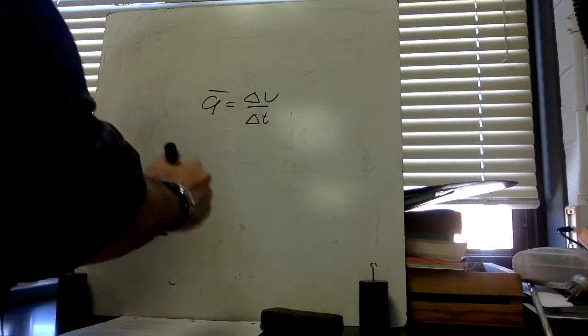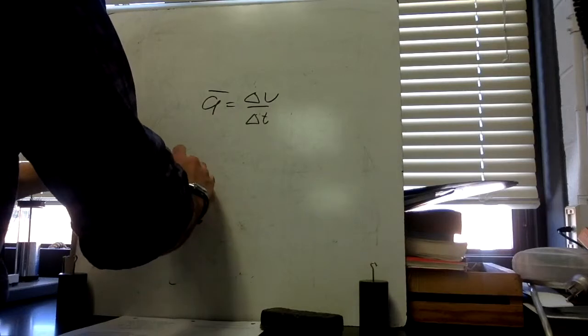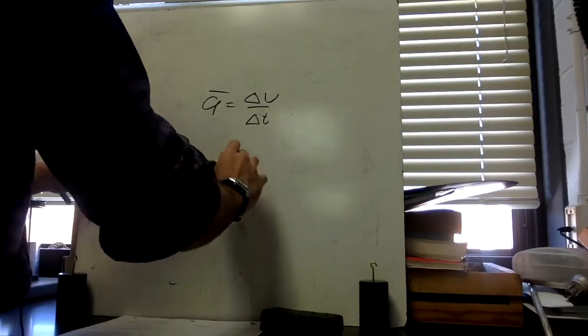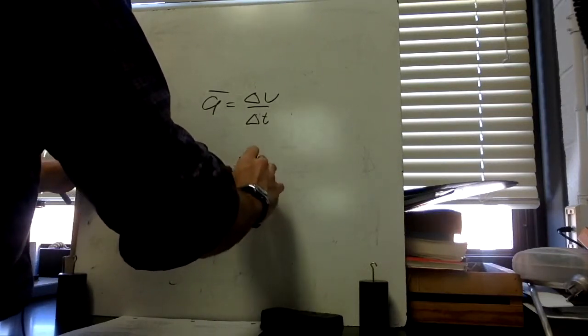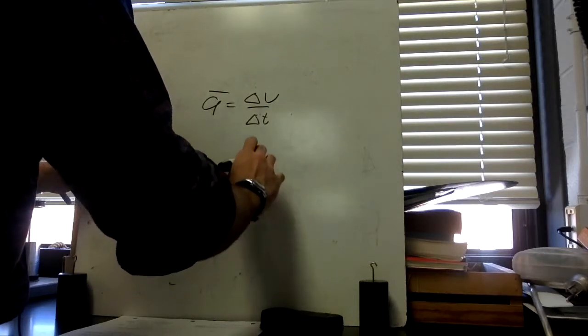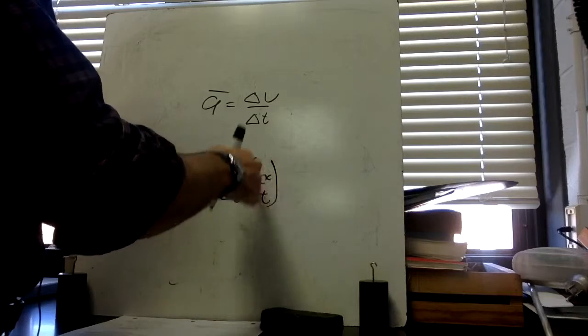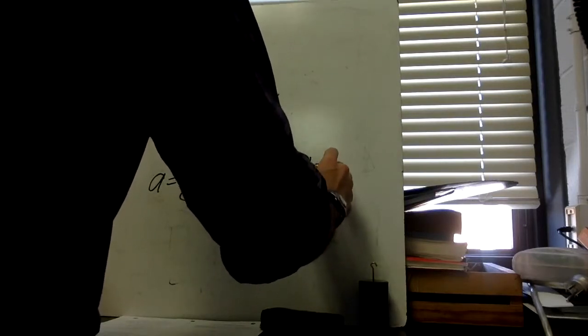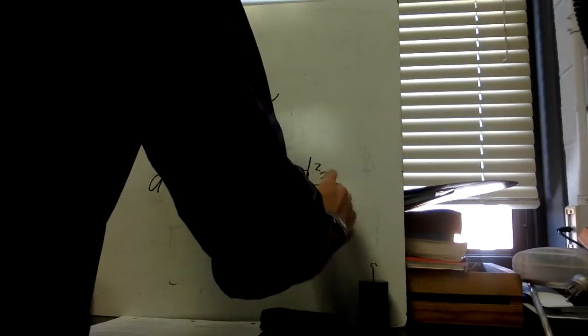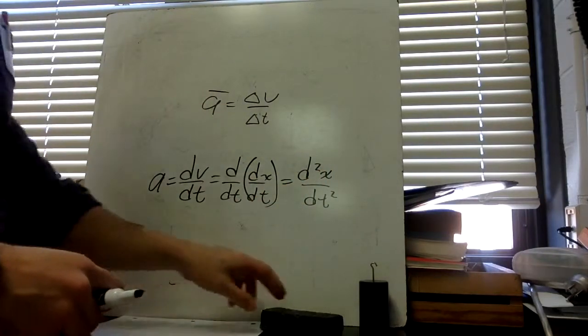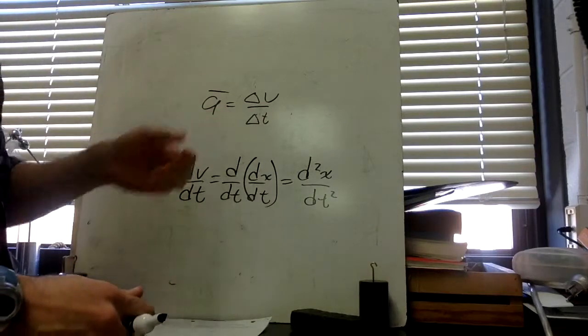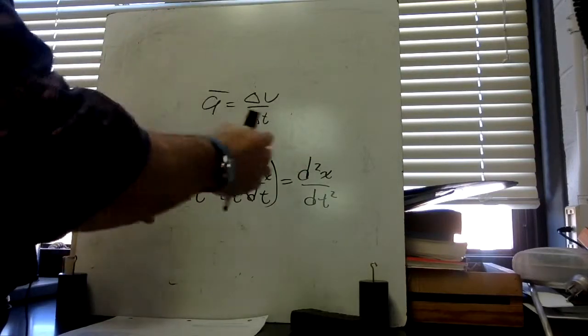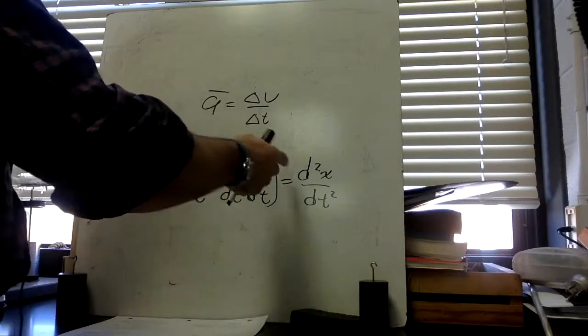So it looks like this: the acceleration is dv/dt, right? And what is v? V is dx/dt. So we're taking the derivative of this derivative. If I'm given a position function, I can find the acceleration function. Another way of writing this is d²x/dt². This is an introduction to the notation. There are other notations you'll see in calculus that we'll use, but for now this is it.